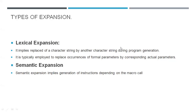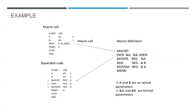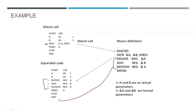Let us understand lexical and semantic expansion by example. The macro call is INCR A, B, A-register, and the macro definition uses &A, &B, A-register as formal parameters. Replacement of &A and &B with A and B is nothing but lexical expansion. Replacement of the macro call with the actual code from the macro definition is called semantic expansion.